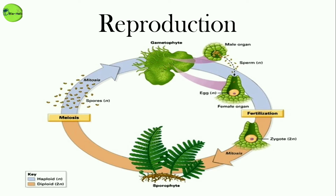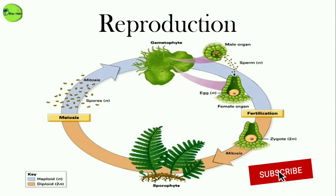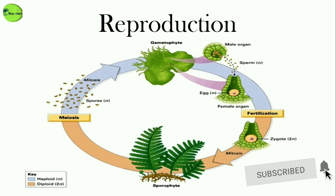The gametophytes of pteridophytes bear male and female sex organs known as antheridia and archegonia. Water is required for the transfer of antherozoids — the male gametes released from the antheridia — to the mouth of the archegonium. The fusion of the male gamete with the egg present in the archegonium results in the formation of a zygote, which thereafter produces a multicellular, well-differentiated sporophyte.